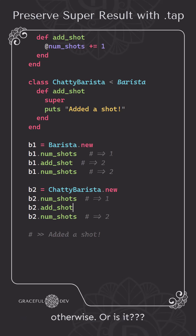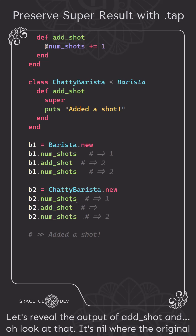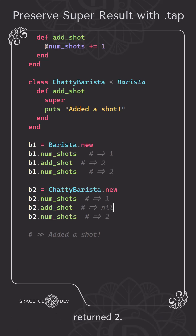Or is it? Let's reveal the output of addShot — and oh, look at that. It's nil, where the original returned two.